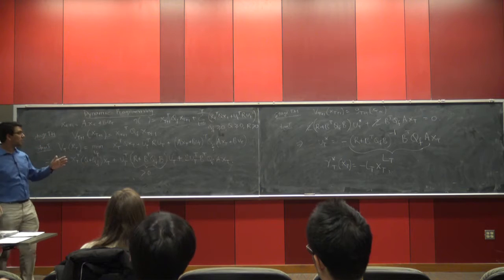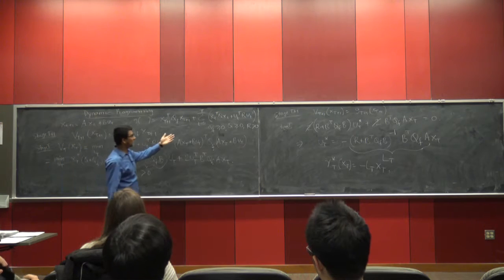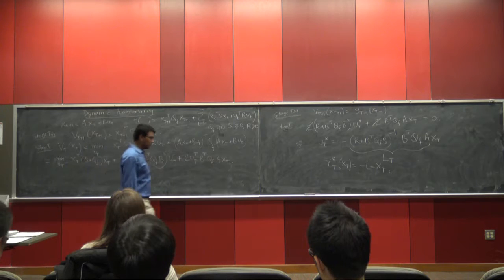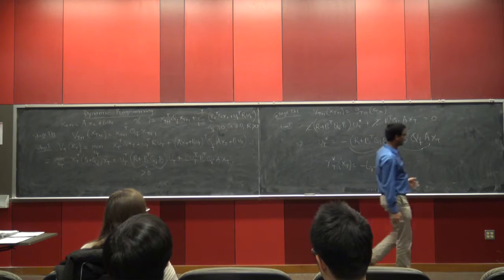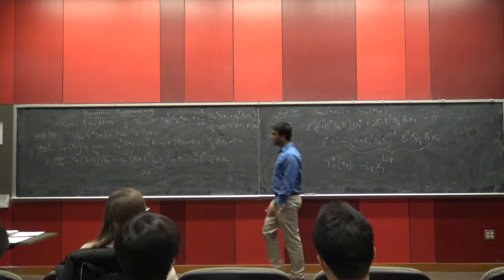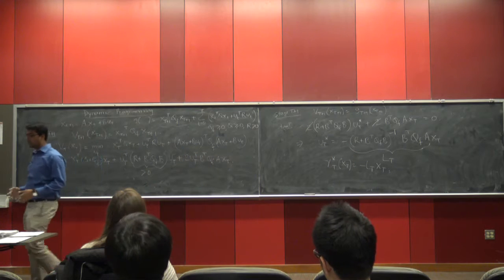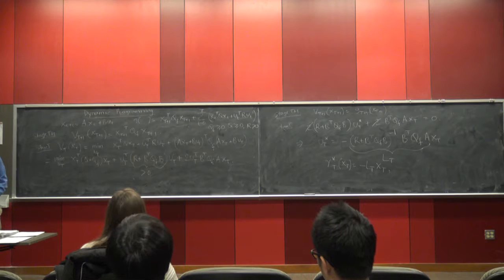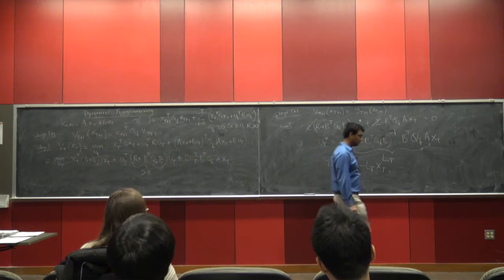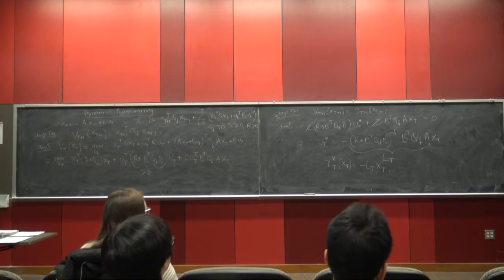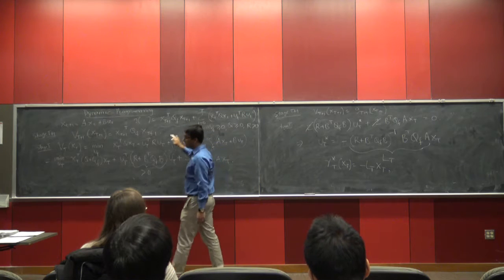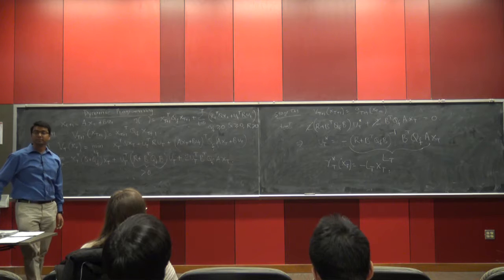The computational requirement as well as the storage requirement in this particular example goes down substantially — all you have to store is a positive definite matrix and a gain matrix. However, 99% of systems are not linear and 99% of cost functions are not quadratic, so it doesn't really help in most modern control examples. But since the 1950s, this theory has been famous because you can represent the value function and strategy just using matrices.